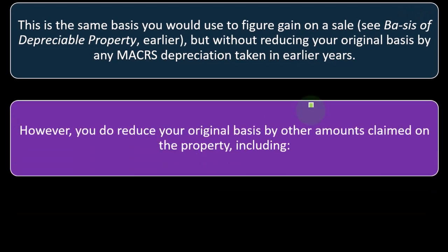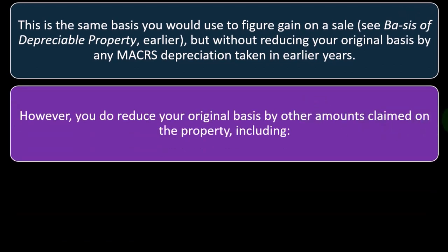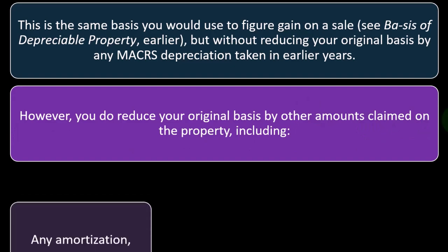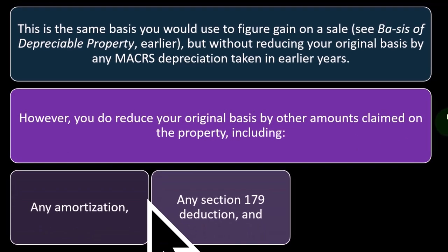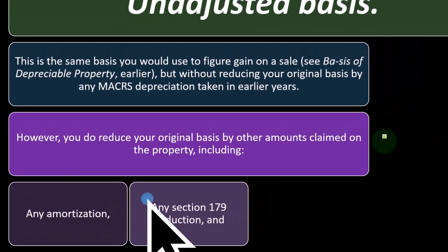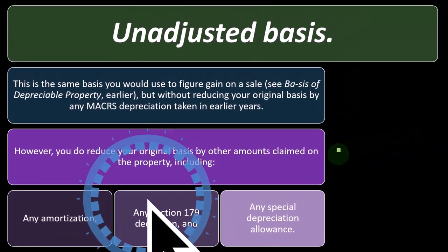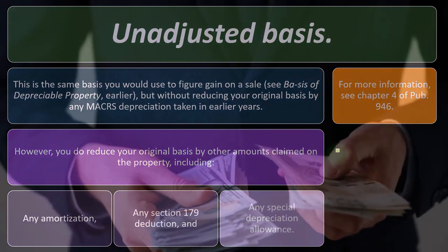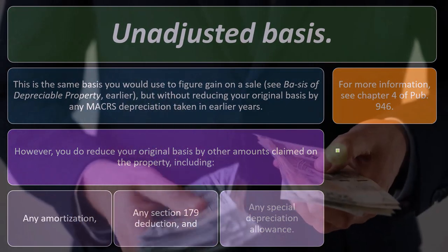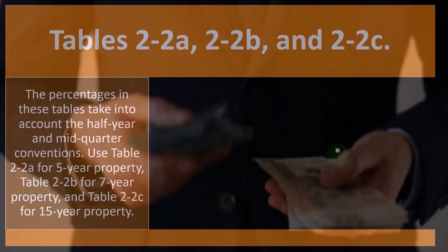However, you do reduce your original basis by other amounts claimed on the property, including any amortization, any Section 179 deduction, and any special depreciation allowance. For more information, see Chapter 4 of Publication 946.